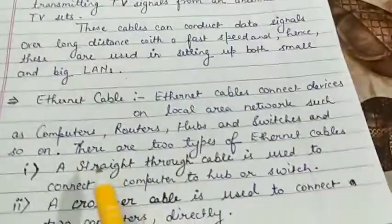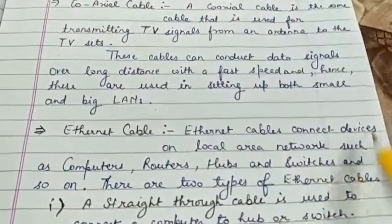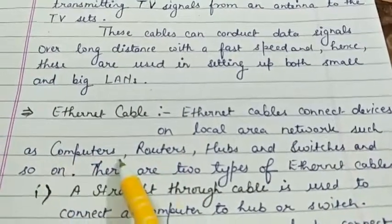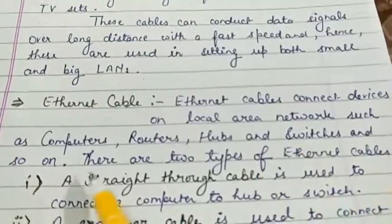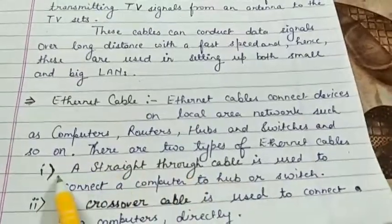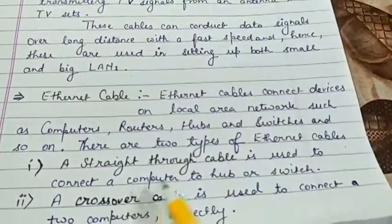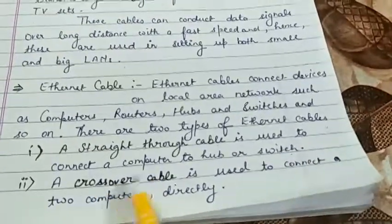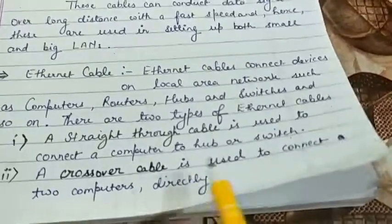The second type is ethernet cable. Ethernet cables connect devices on a local area network such as computers, routers, hubs, and switches. There are two types: first, a straight-through cable, used to connect a computer to a hub or switch; second, a crossover cable, used to connect two computers directly.